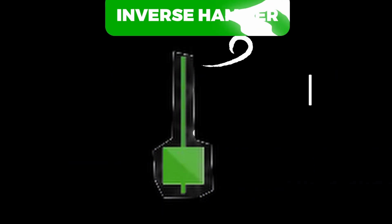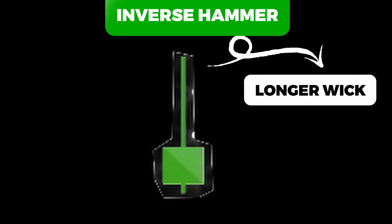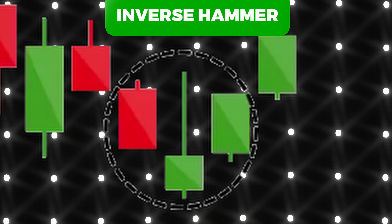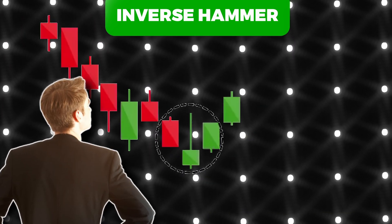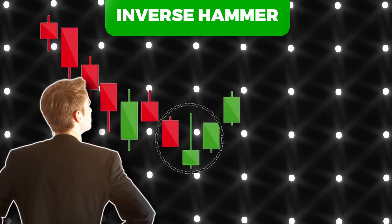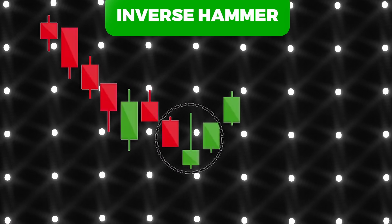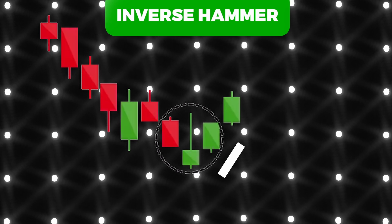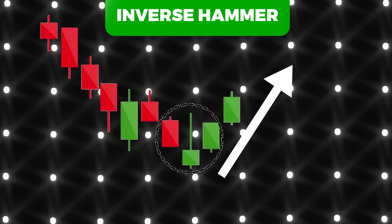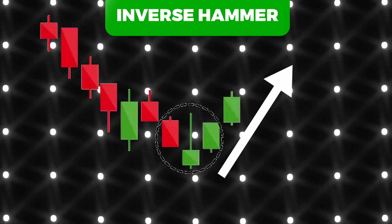The inverse hammer is similar to the hammer but with a long upper wick. This pattern suggests that buyers attempted to push the price up but selling pressure followed. However, the higher price reached indicates potential upward momentum.